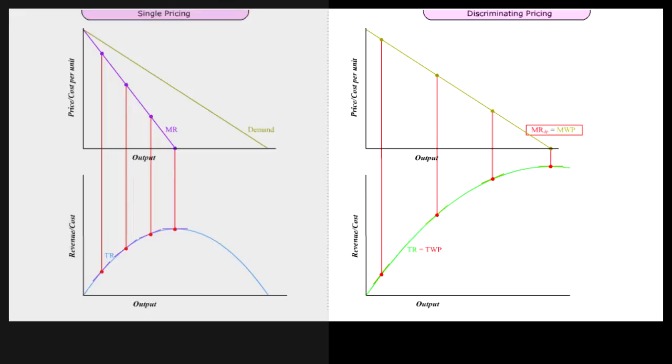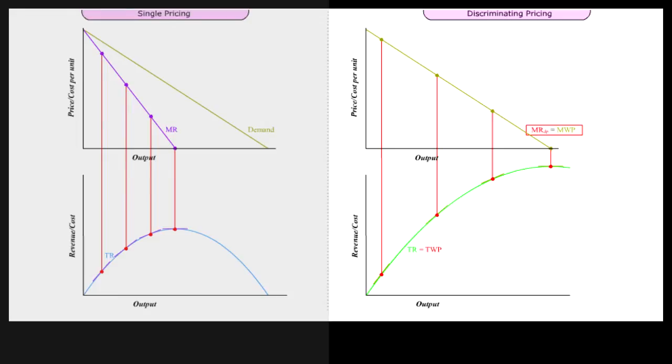MRDP is the same as the marginal willingness to pay, MWP. TR reaches its maximum when MRSP is equal to zero. This happens midpoint down the straight line demand curve.